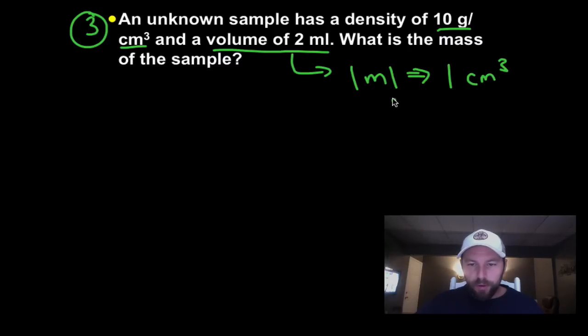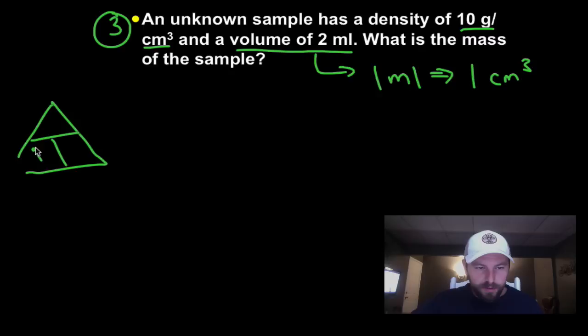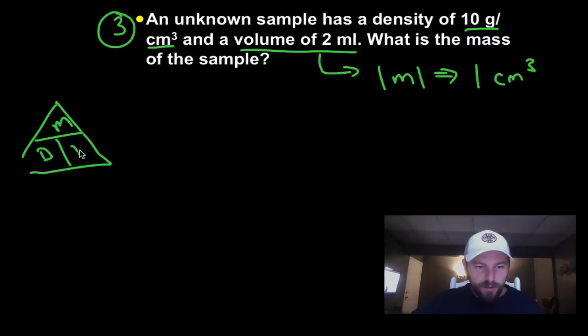These are both units of volumes right here, just metric units. So don't worry, don't get too confused by that. So let's start with our triangle. There you go. Density, mass over volume.